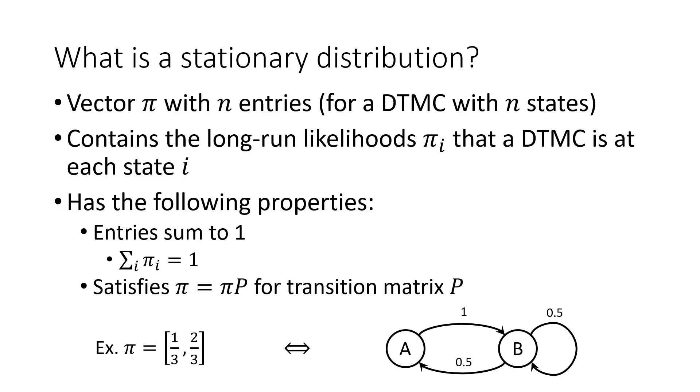The example we have here of a stationary distribution, one-third, two-thirds, corresponds to a DTMC with a pair of states in which the long-run likelihood that we are at the first state is one in three, and the likelihood that we are at the second state is two in three.